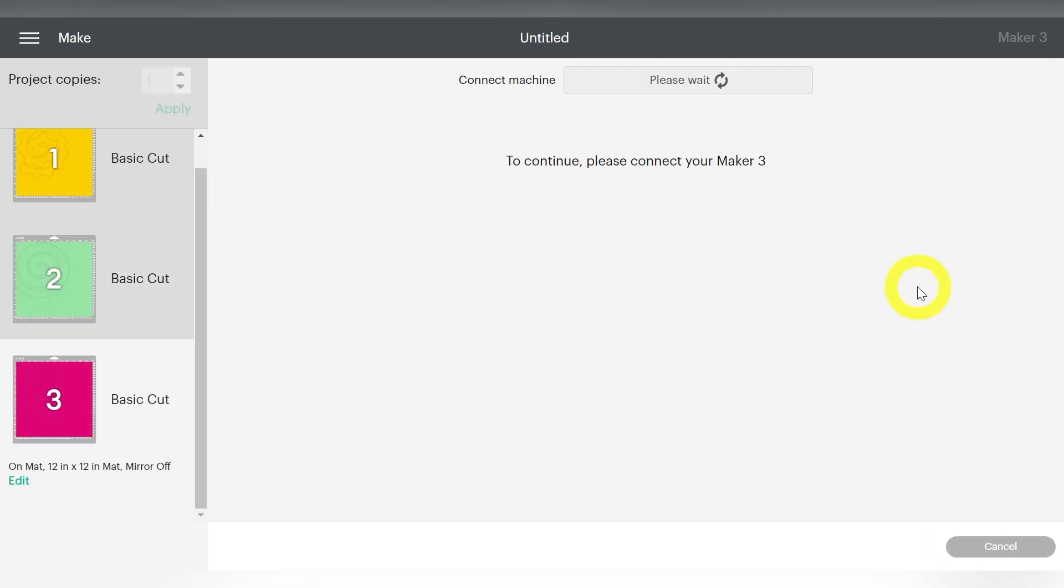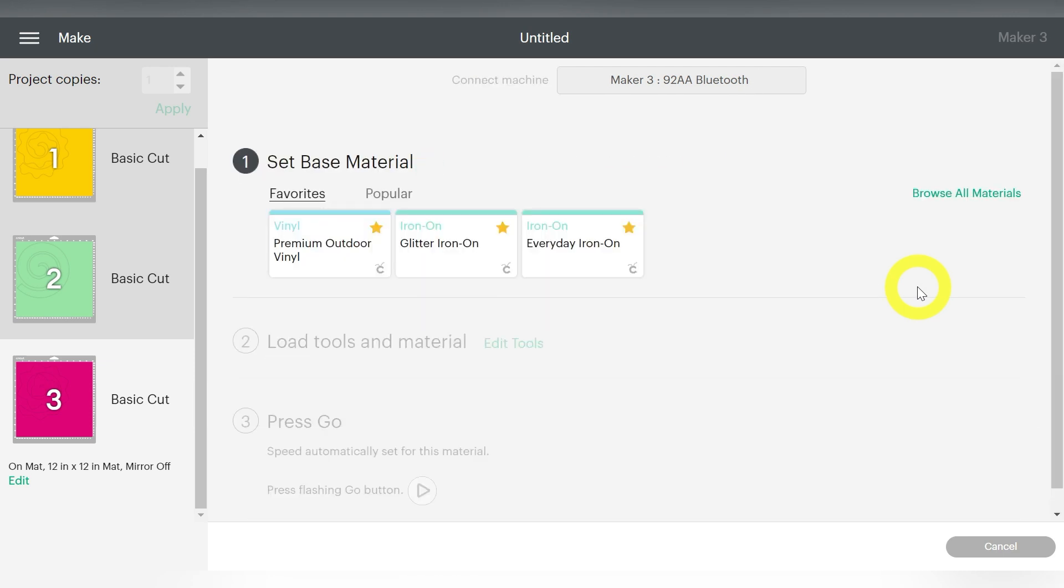Now we're going to go ahead and connect to our Maker 3. And we're cutting on a Maker 3. And I just want to say that the makers do have the rotary blade. So you may be asking, well Becky, if you're cutting on a maker, why are you going to cut a stencil and cut this by hand?